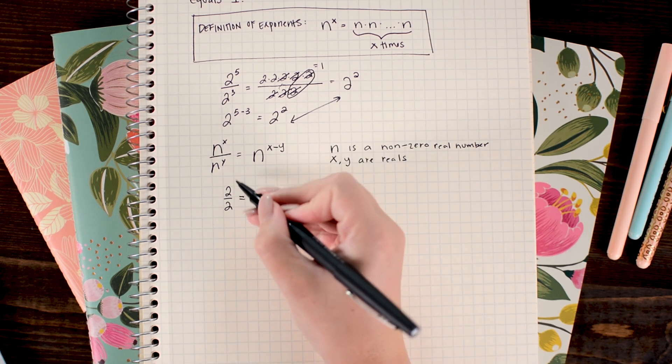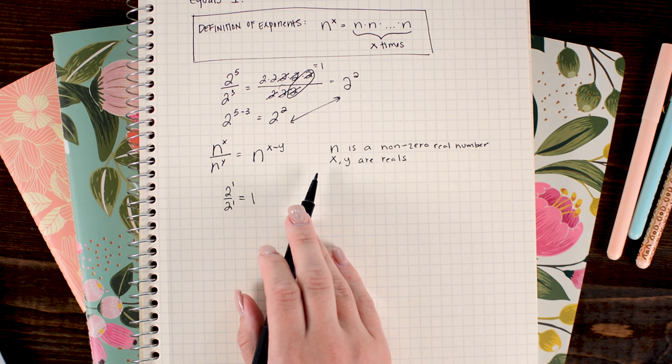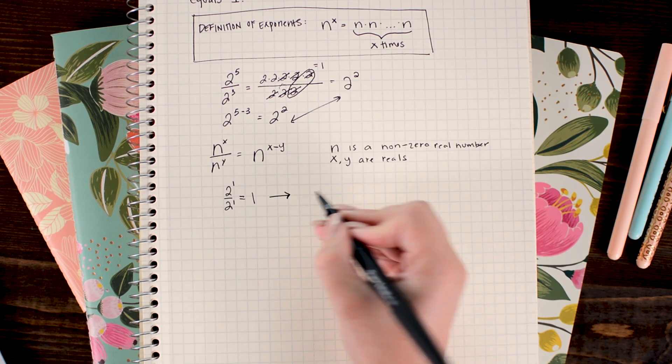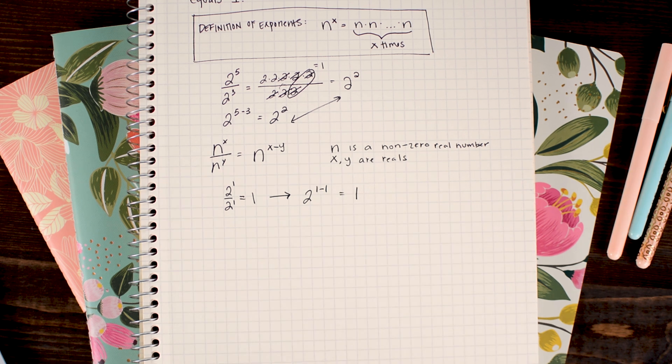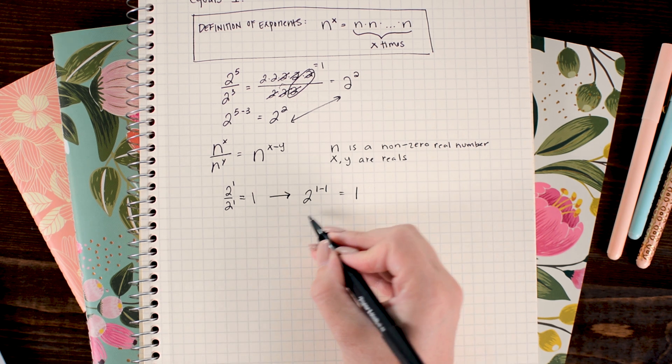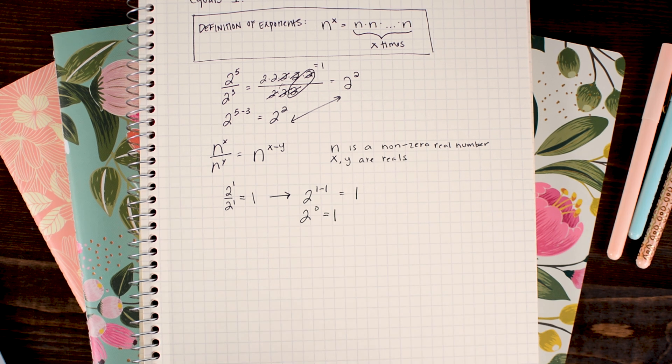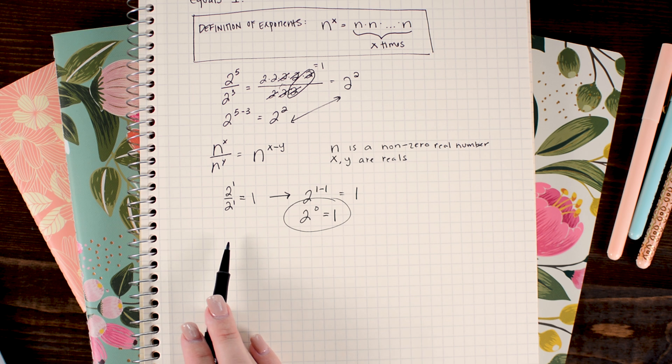Now this is the same as 2 to the first power, right? And now I'm going to just apply this rule I've written above and subtract the powers. So when I do that I get 2 to the 1 minus 1 equals 1. And then of course 1 minus 1 is 0. So that gives us 2 to the 0 power equals 1, and there we found it.